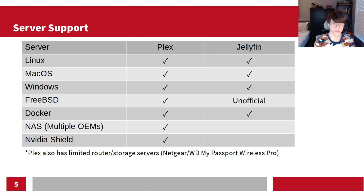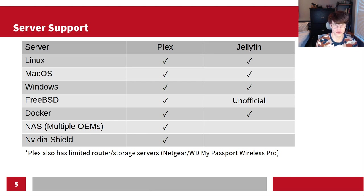Looking at server support, you'll notice the big three — Linux, macOS, and Windows — are all supported on both. FreeBSD is supported on Plex where it's unofficial on Jellyfin, which comes down to community integration. They both have Docker images provided by the companies that created them, so they're not community images. For NASs, Plex supports multiple OEMs, primarily Western Digital but also Asus and most major brands — pretty much if you have a relatively beefy NAS, there's a good chance Plex can run on it.